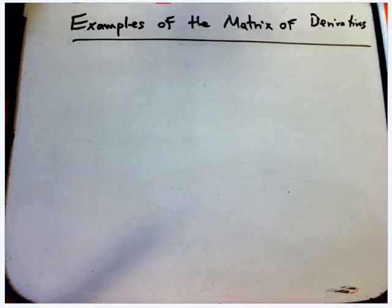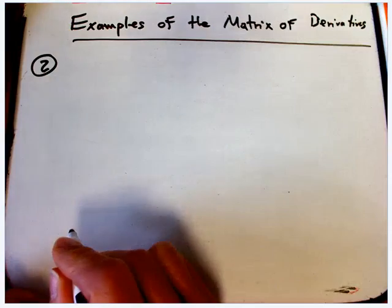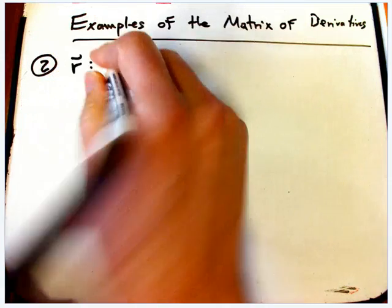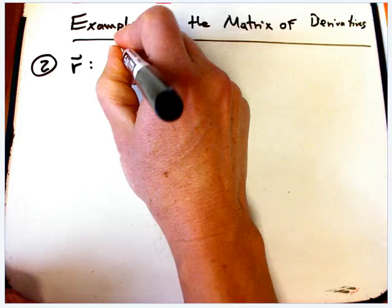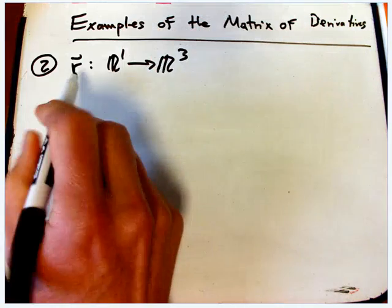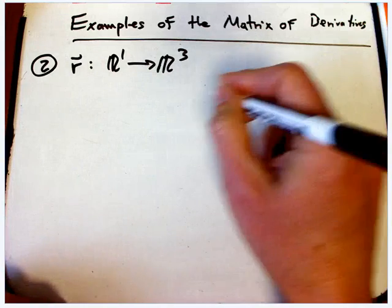So, next example. Let me do one more example in this video, and I'll do a part two with another one. Just as a bit of a contrast, that was a function with three inputs and one output. What about a function with one input and three outputs, which we often denote with a vector symbol over it because we think of it as a vector-valued function?